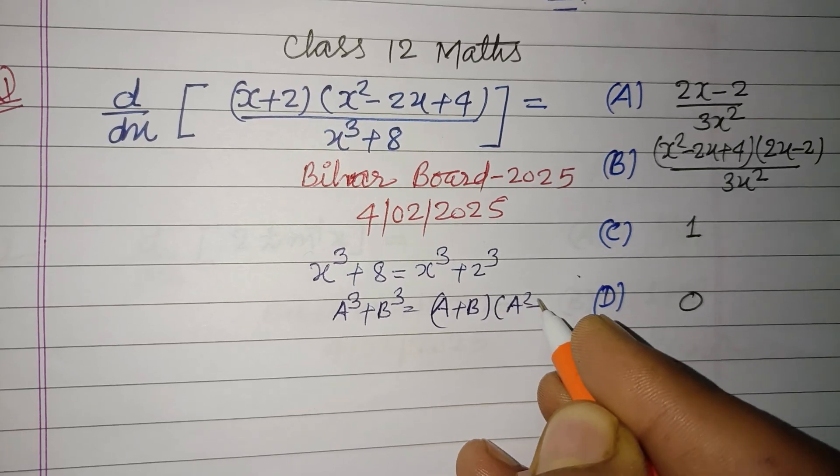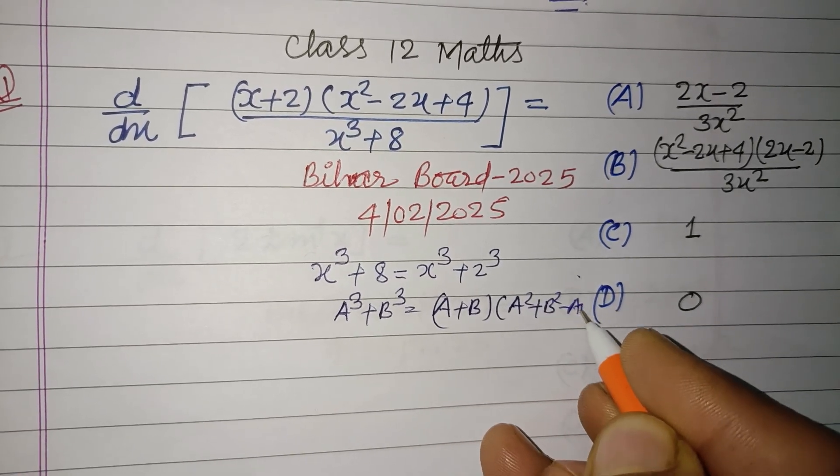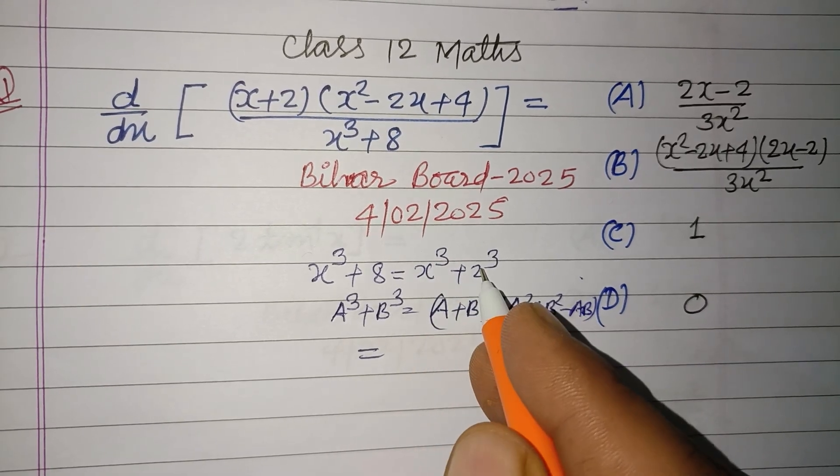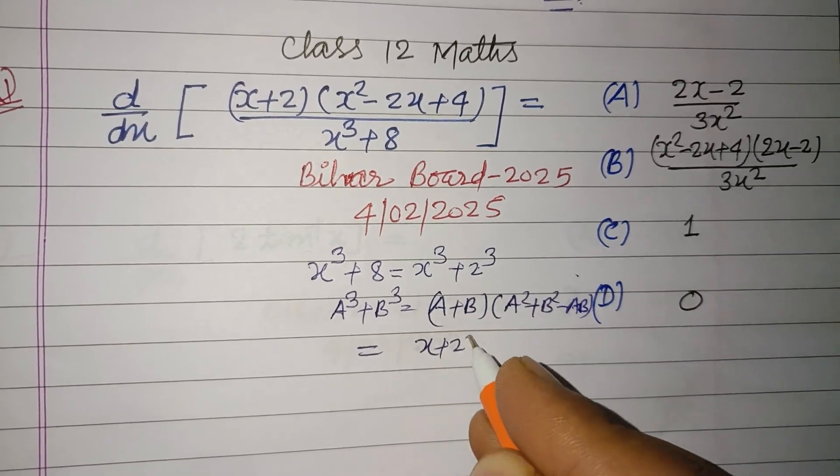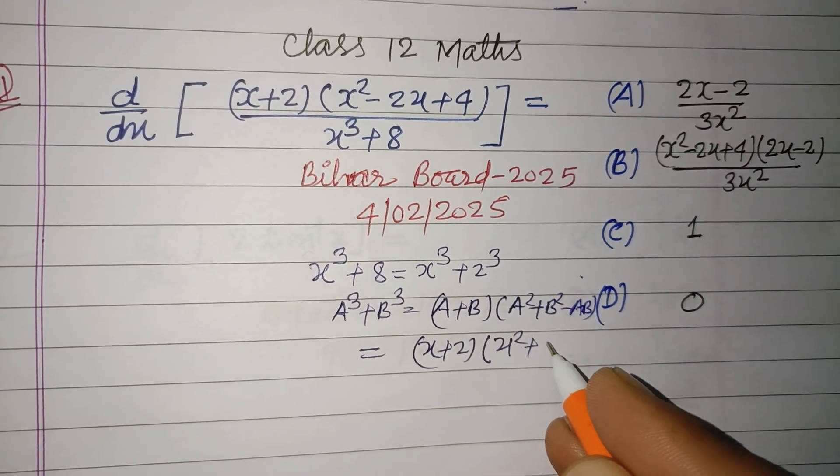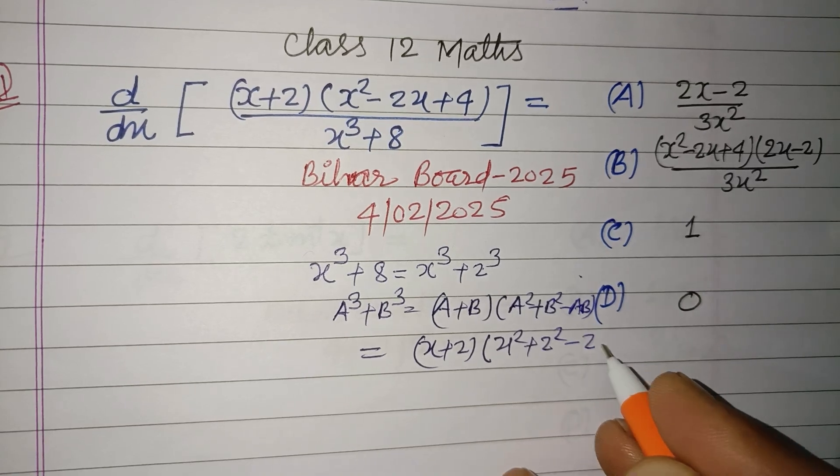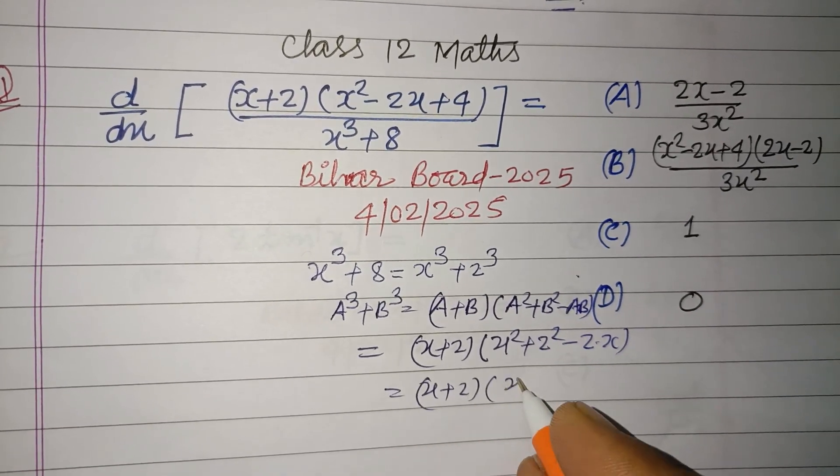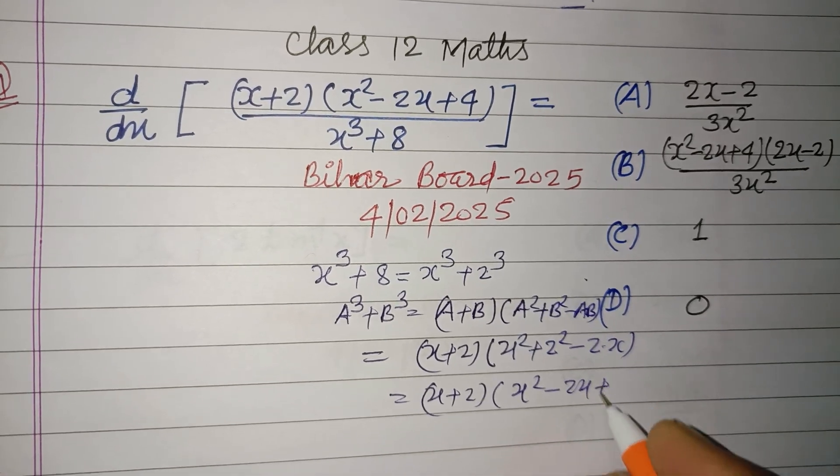(a²+b²-ab). So putting this value, a is x and b is 2. So x+2, and x²+2²+2 times x, which gives x+2(x²-2x+4).